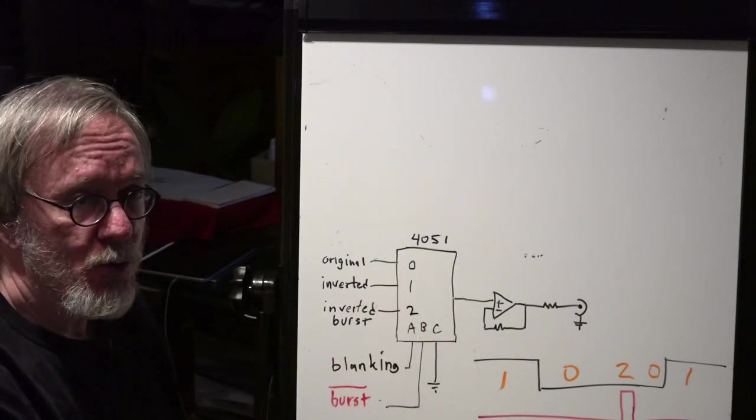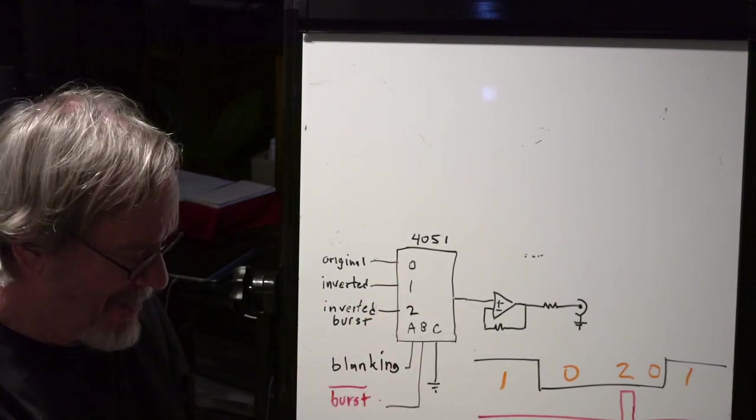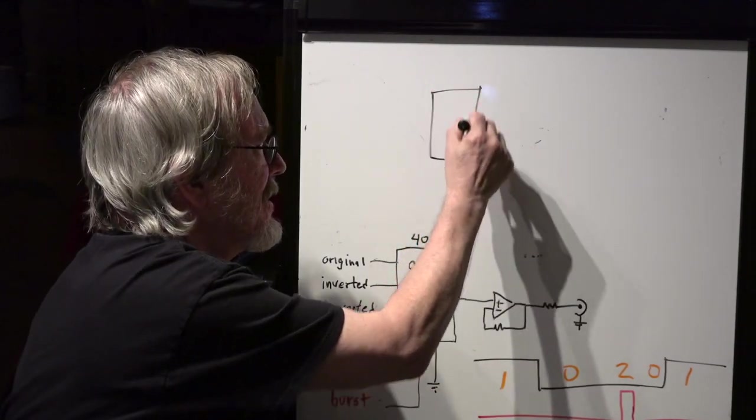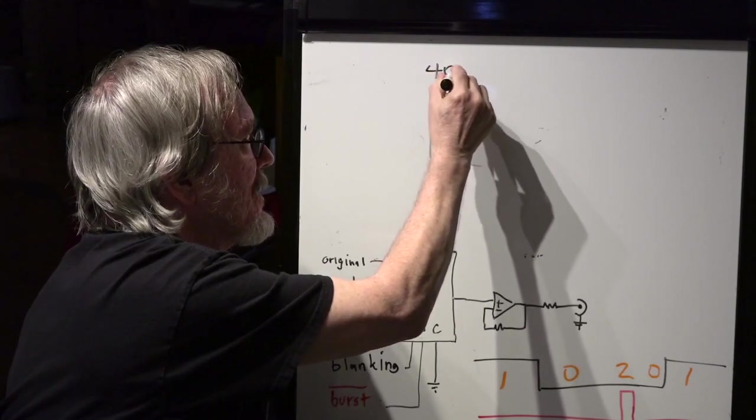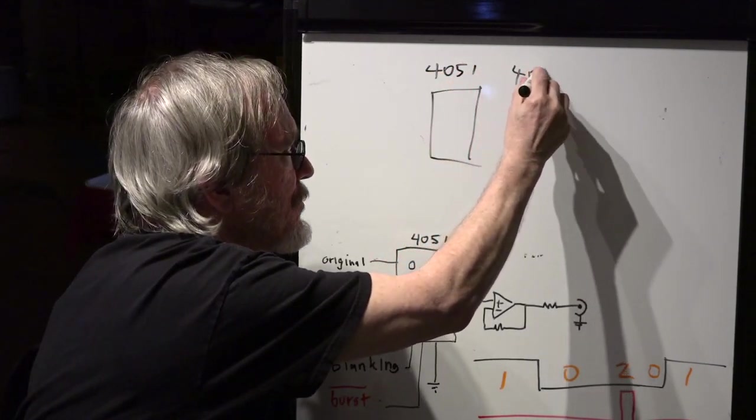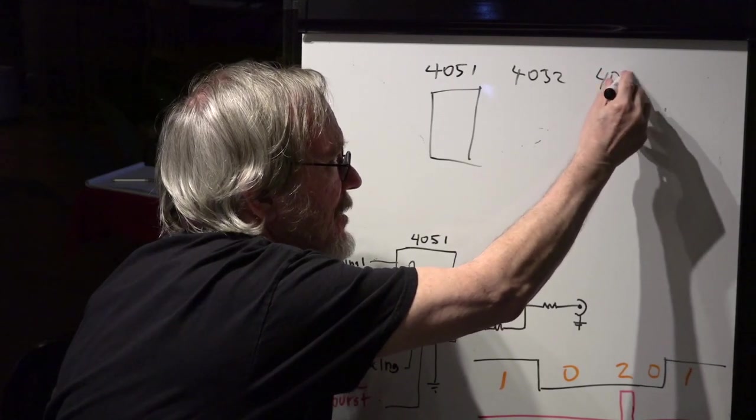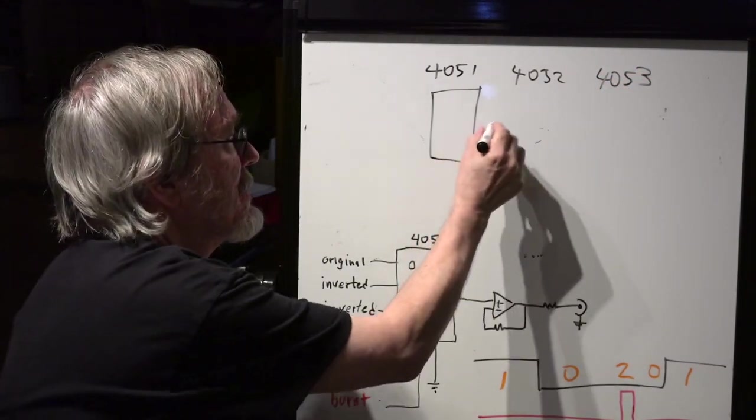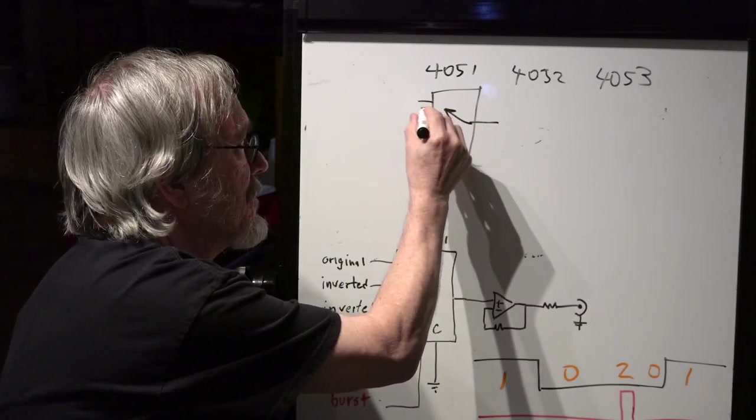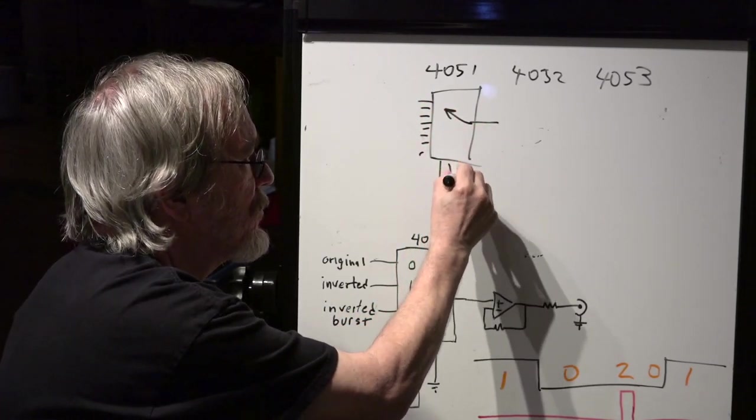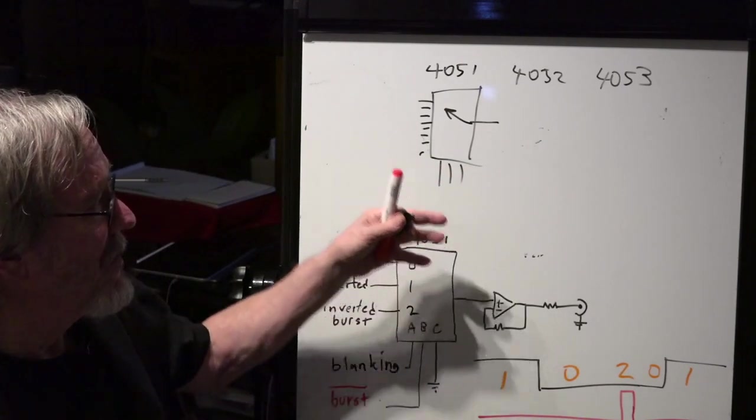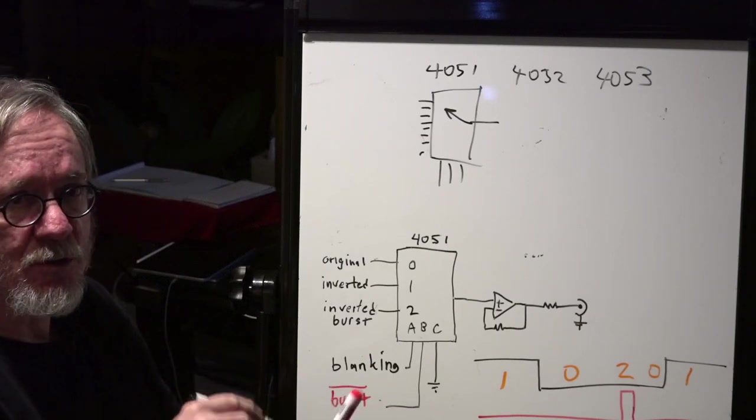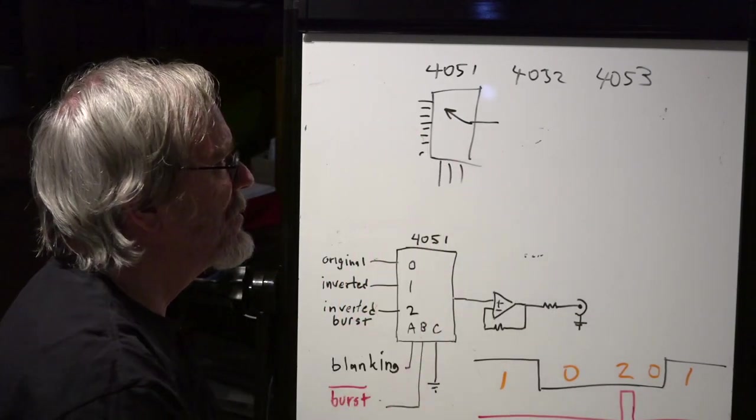If we look at this, this is a switch. This is the 4051. It comes from a family of 4050s. There's the 4051, the 4052, and the 4053. The 4051 is a one by eight. It's literally just a switch. It goes one, two, three, four, five, six, seven, eight. And it's controlled by three bits. Zero through seven is zero, zero, zero, zero, one, zero. You get the binary switch. That's a 4051.